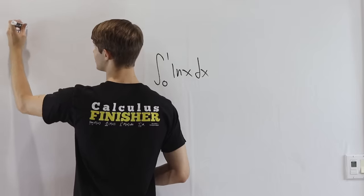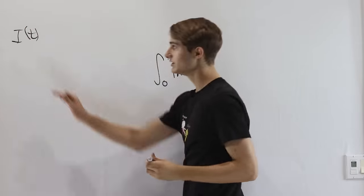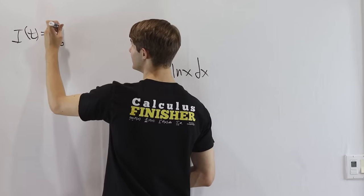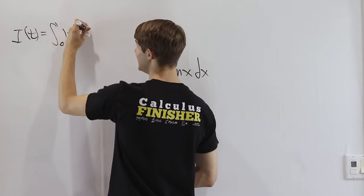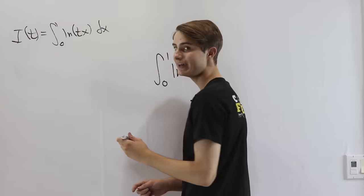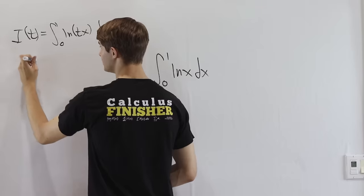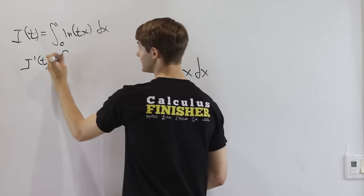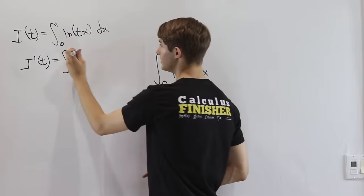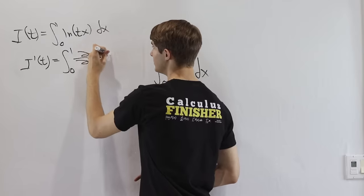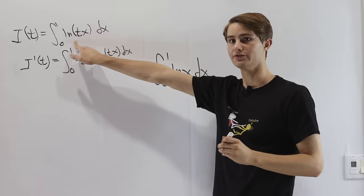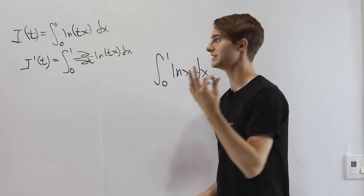Feynman's technique, which is also known as the Leibniz rule, says if we define some function i of t as an integral — in this case from 0 to 1 — of some function of t and x, say natural log of t times x with respect to x, and if we differentiate with respect to t, we get the integral from 0 to 1 of the partial derivative of the inside with respect to t. This usually allows us to turn a complicated function, like a natural log, into something easier.